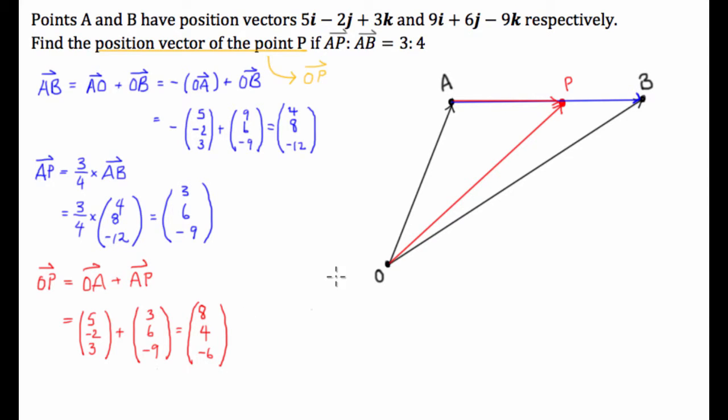So, we can then say in the end, therefore, the position vector of the point P is equal to. Now, it's important that if they give it to us in i, j and k notation, we give it back to them in that notation. So, it's going to be 8i plus 4j minus 6k.